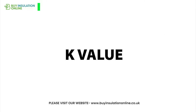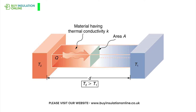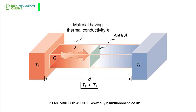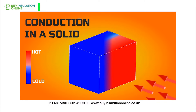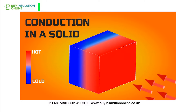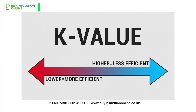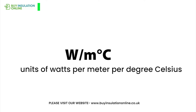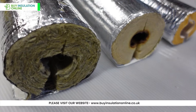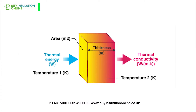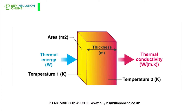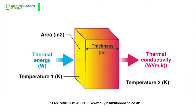K-value. K-value represents the thermal conductivity of a material and it measures its ability to conduct heat. It is a measure of how easily heat passes through a material. The lower the K-value, the better the insulation. It is expressed in units of watts per metre per degree Celsius. K-value depends only on the type of the material, not on its thickness or temperature difference. K-value is also known as thermal conductivity or lambda value.